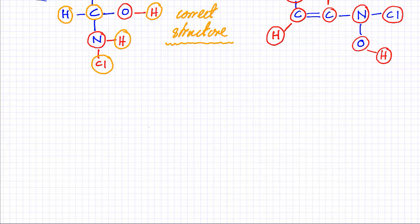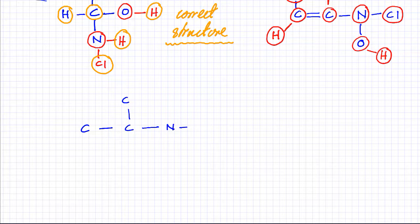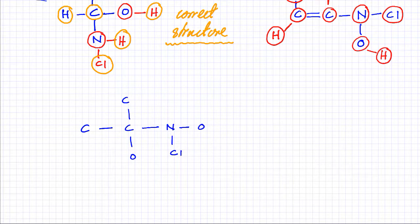I'm going to draw a few more structures, trying to make them as complicated as possible. I have a carbon atom attached to another carbon, which is attached to another carbon, which is attached to a nitrogen atom, then an oxygen atom. There's also another oxygen atom and a chlorine atom. This is my basic structure and I'll try to complete it now.